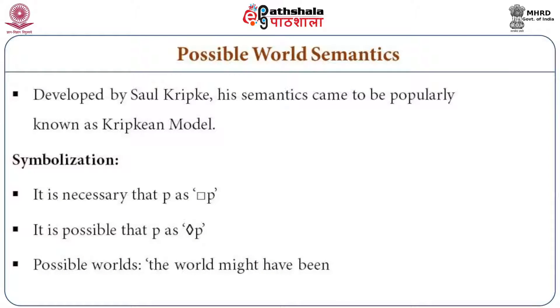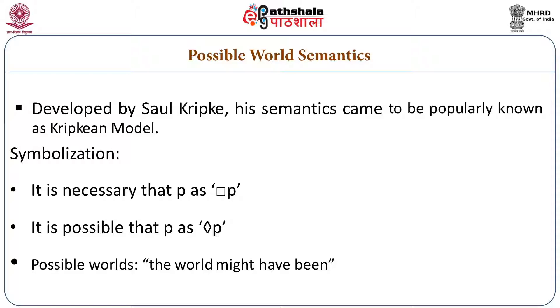Modal logic is an attempt to provide truth semantics for these kinds of modal sentences. A logician known by the name Saul Kripke has given a semantic model called Kripkean model or possible world semantics. A modal sentence like 'it is necessary that P' can be symbolized as Box P, and 'it is possible that P' can be symbolized by Diamond P. Box P means 'it is necessary that P' and Diamond P is read as 'it is possible that P.'